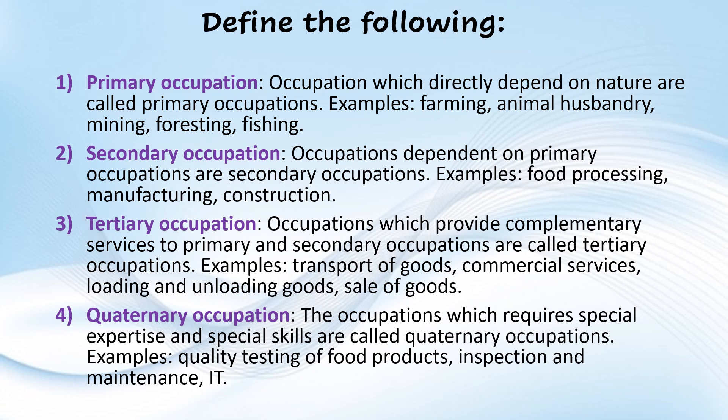Define the following: Primary occupation — occupations which directly depend on nature, like farming, animal husbandry, forestry, and fishing. Secondary occupation — occupations dependent on primary occupations, like food processing, manufacturing, and construction. Tertiary occupations — occupations which provide complementary services to primary and secondary occupations, like transport of goods, commercial services, loading and unloading of goods, and sale of goods. Quaternary occupations — occupations which require special expertise and skills, like quality testing of food products, inspection and maintenance, and information technology.